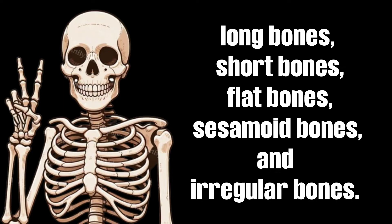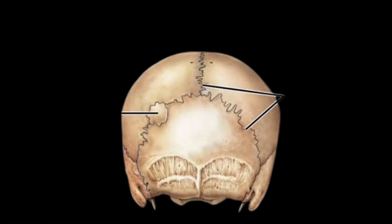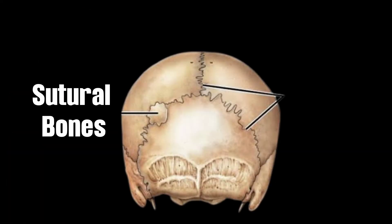Now you have to know that there is a minor category of bone called sutural bones. They are just small accessory bones and they are sometimes found between cranial sutures. Not everyone has them, but it is actually necessary to know of their existence. So let's move over to the first classification of bone, which is long bones.